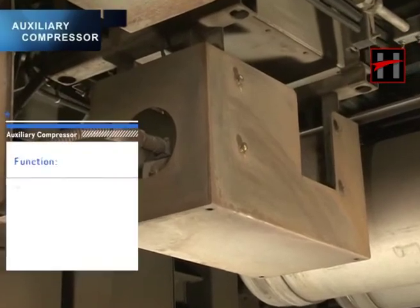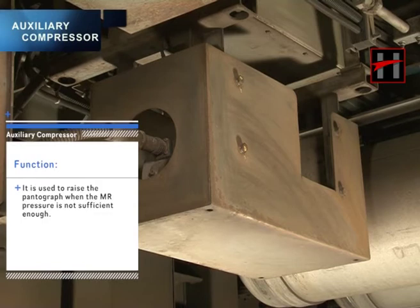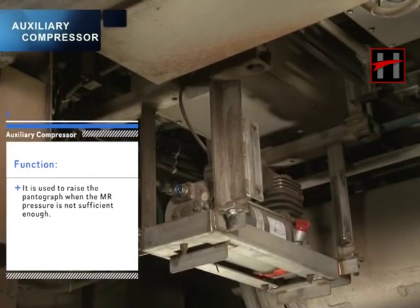The auxiliary compressor is used to raise the pantograph when the MR pressure is not sufficient enough to do so.